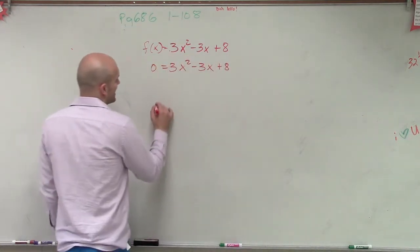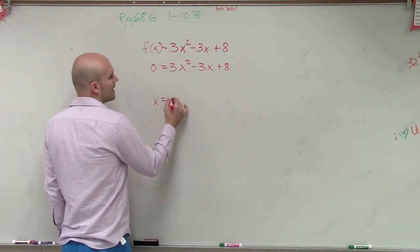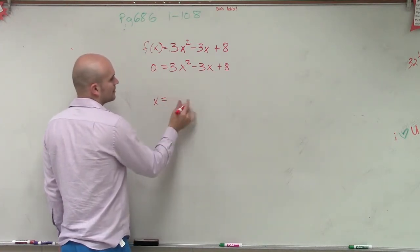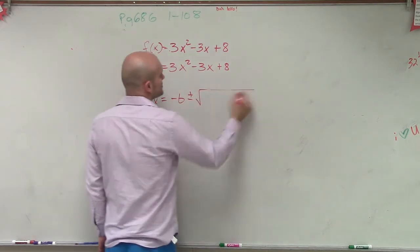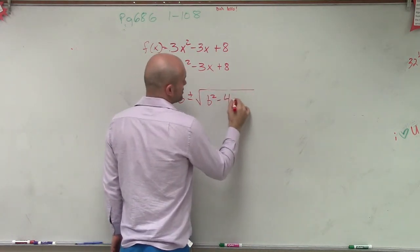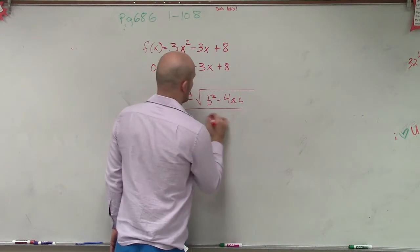Remember, the quadratic formula said x equals opposite of b, plus or minus the square root of b² minus 4 times a times c, all over 2a.